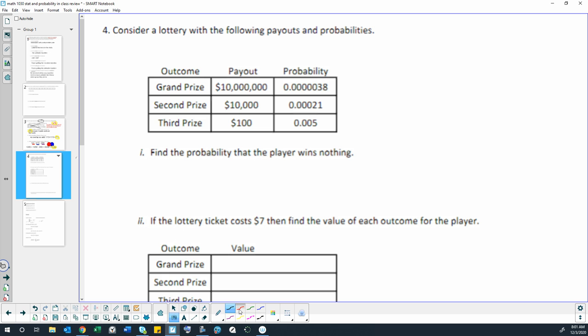We're adding 0.00000038 plus 0.00021 plus 0.005. Make sure I put the right number of zeros. So I get a probability of 0.0052138. That's the chance you win something, even if it's just $100.